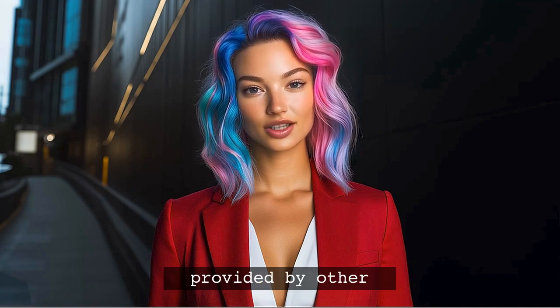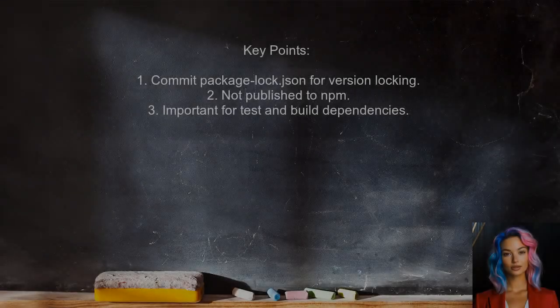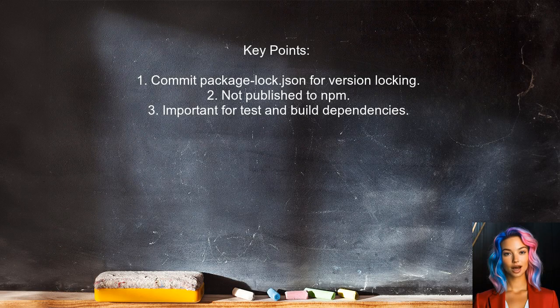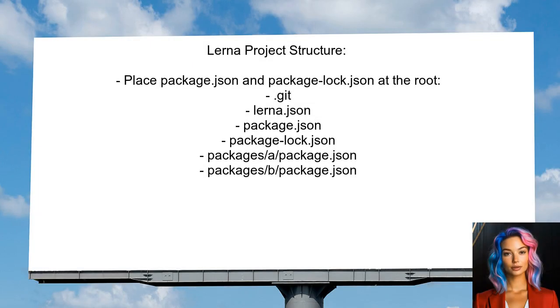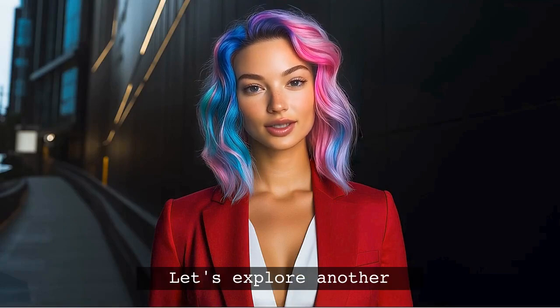Let's look at the answers provided by other users. One user emphasizes that while it's generally recommended to commit the package-lock.json file, it ultimately depends on your project structure. They note that this file is not published to npm, but it's essential for locking versions of dependencies in your repository. Additionally, if you're using Lerna to manage multiple packages, you should only have the package-lock.json at the root of your repository, not in each sub-package.